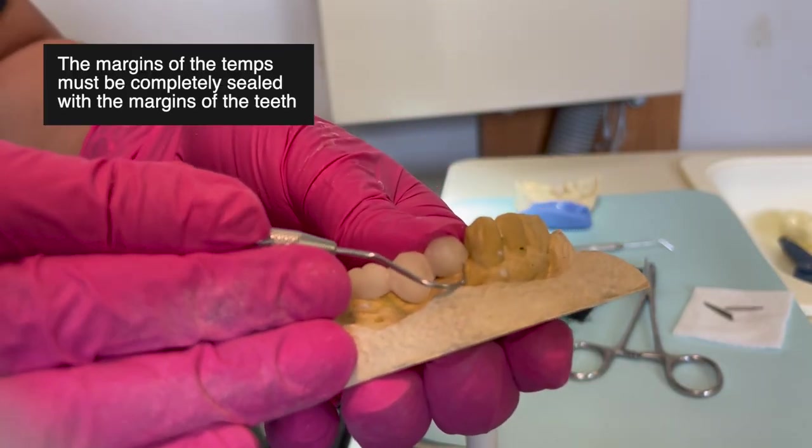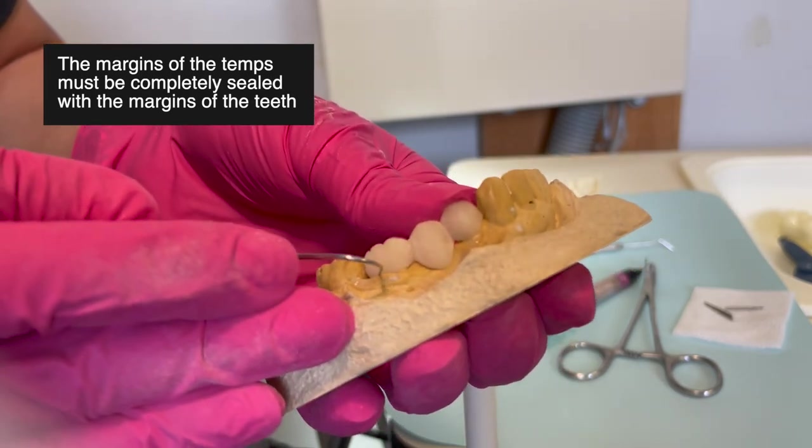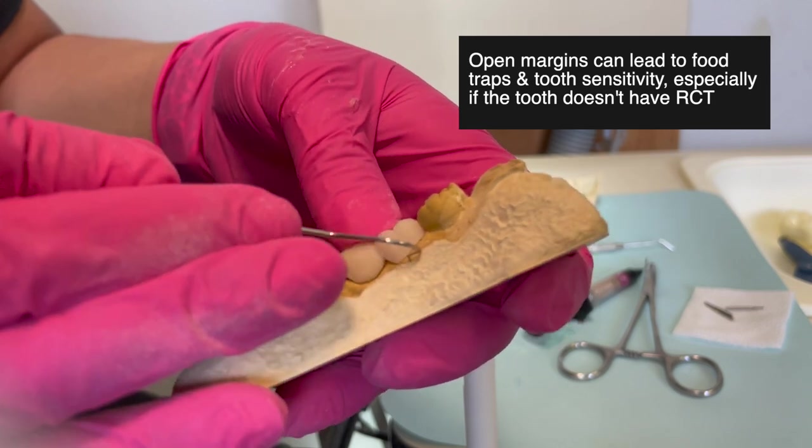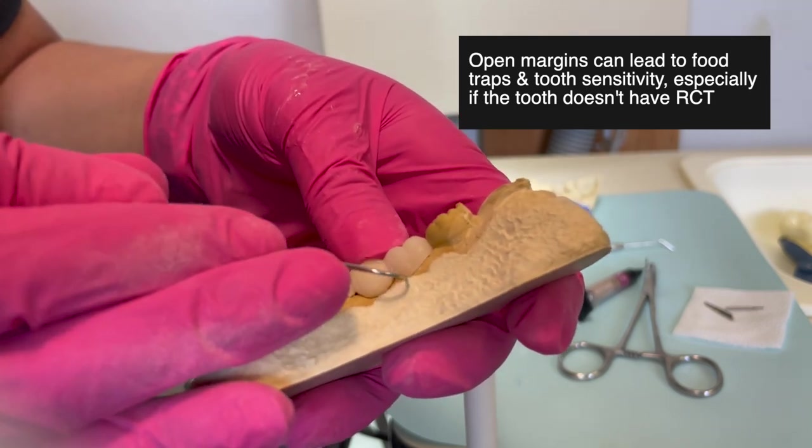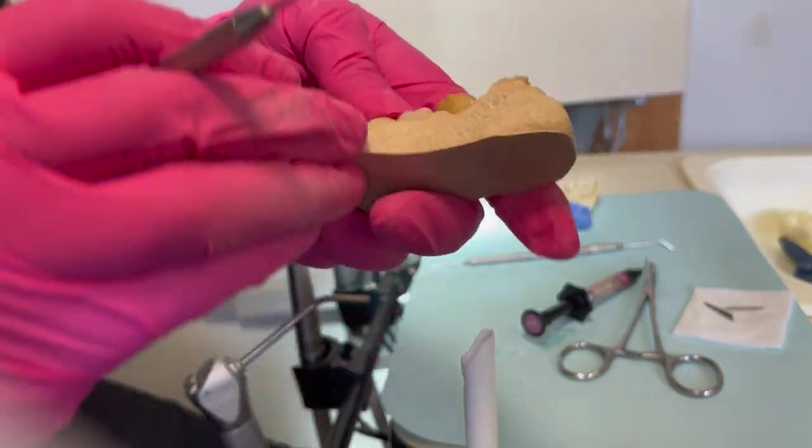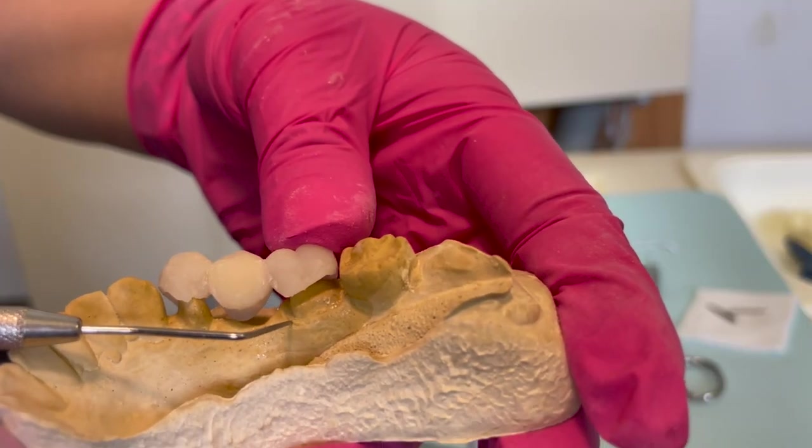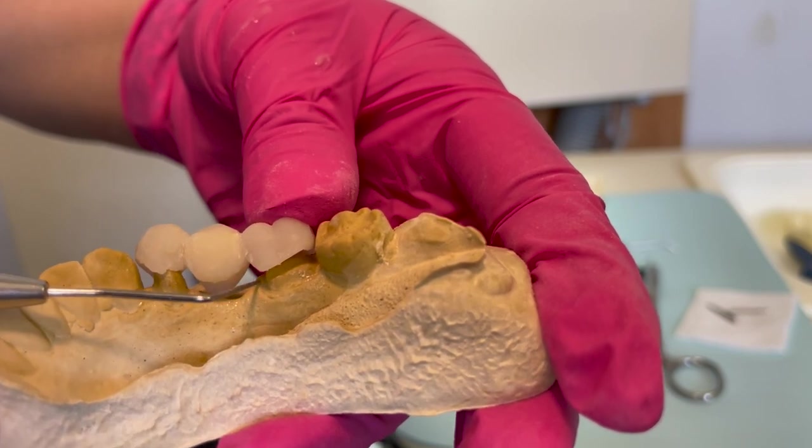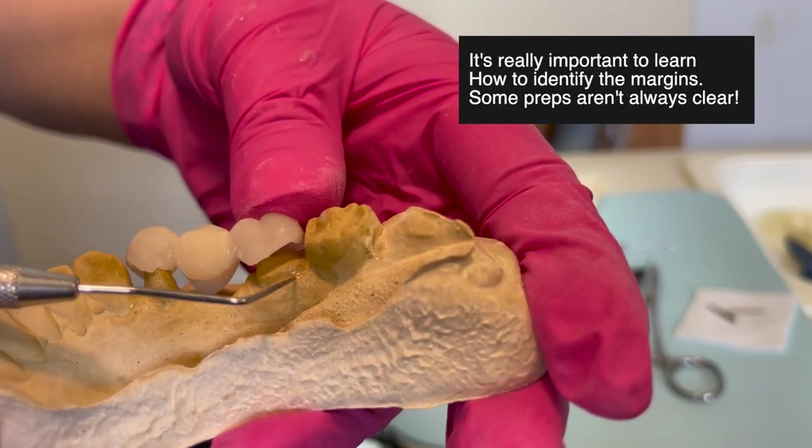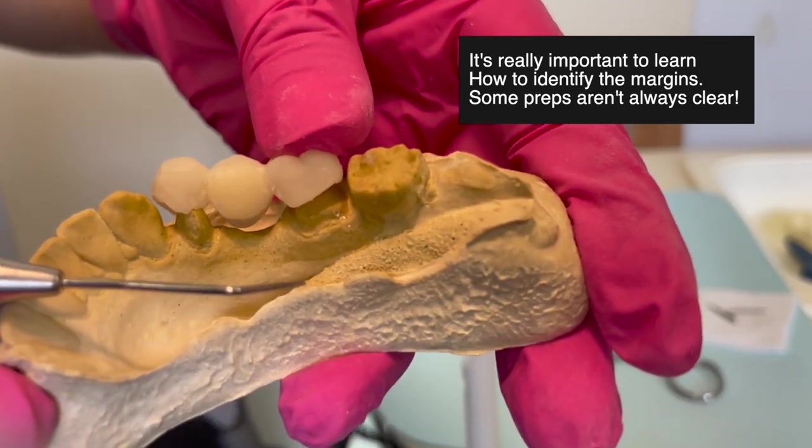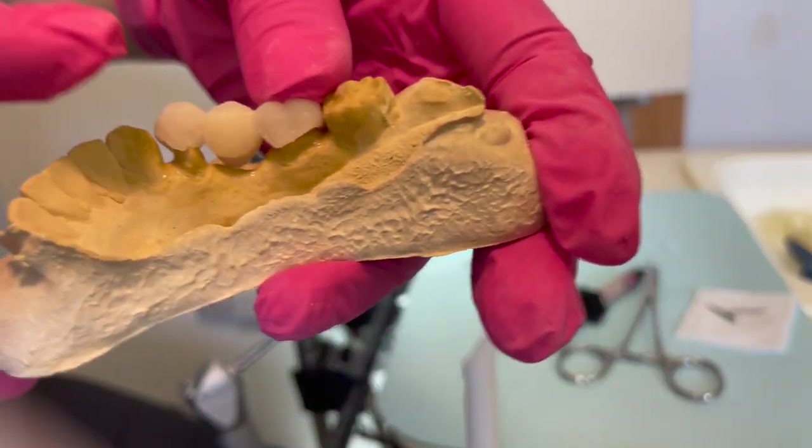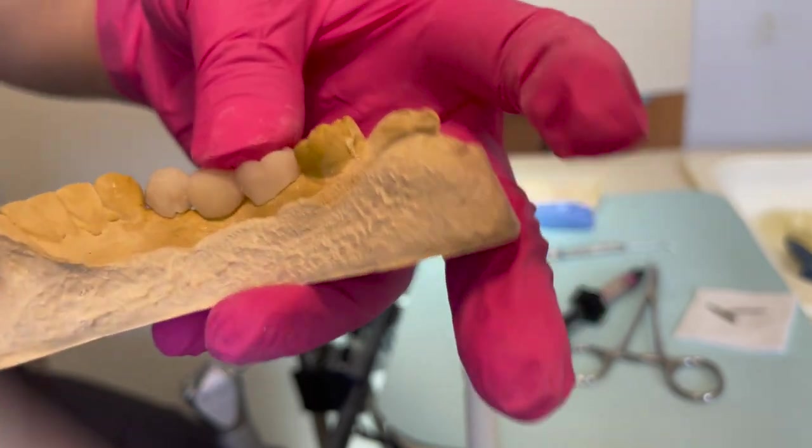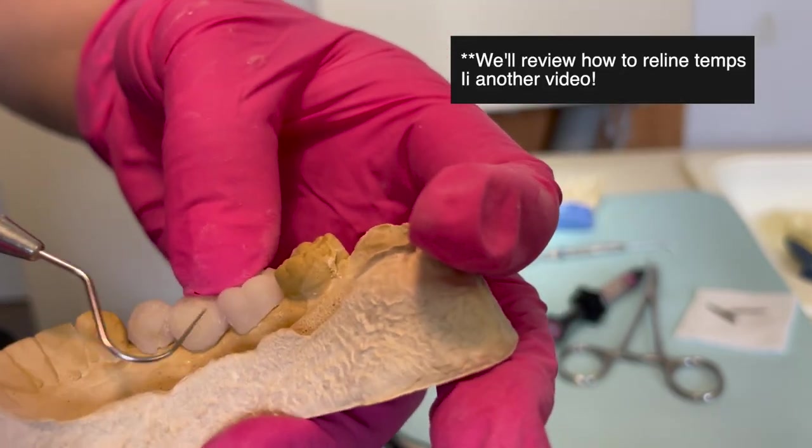Next thing is to check the margins. You're going to run the explorer up and down, and you basically don't want to feel any catches or an opening space for the explorer to fit in. You want to be able to run the explorer and feel it smooth between the margin line and the crown. You just have to know exactly where your margin is. Try to evaluate it really well so that you are able to determine whether you have an overhang or it's not sitting all the way.